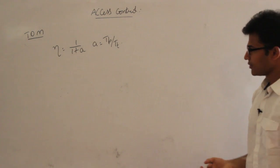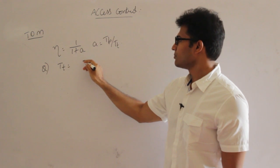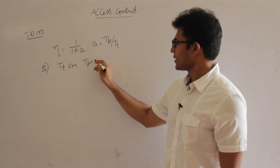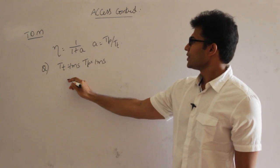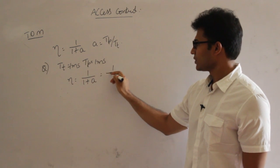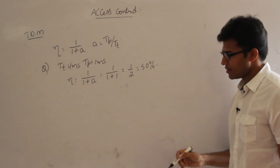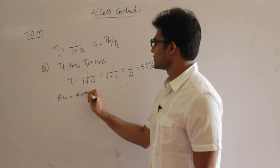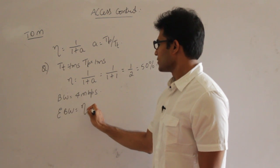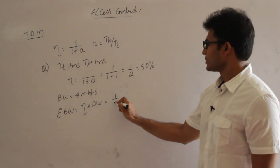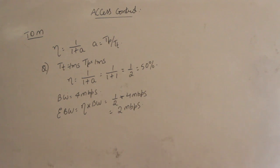Let's look at a problem. Generally they give you packet length, bandwidth, distance, and velocity to compute TT and TP, but I will give them directly. If TT equals 1 millisecond and TP equals 1 millisecond, then efficiency equals 1/(1+A) = 1/(1+1) = 1/2, so 50% efficient. If the bandwidth is 4 Mbps, then effective bandwidth equals efficiency times bandwidth = 50% times 4 Mbps = 2 Mbps.